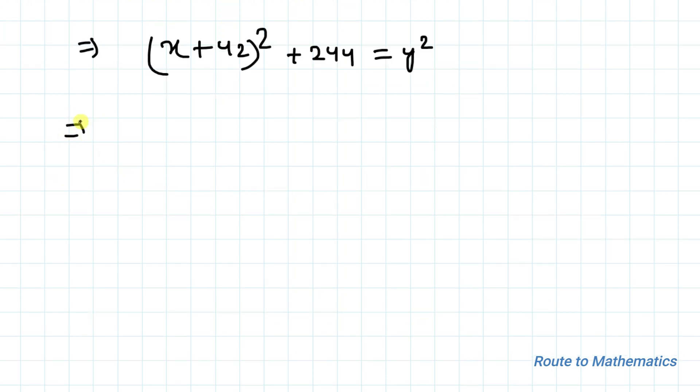Now taking x plus 42 whole square to the right hand side, we have y squared minus x plus 42 whole square. We know an algebraic identity of a squared minus b squared which is equal to a plus b multiplied with a minus b.